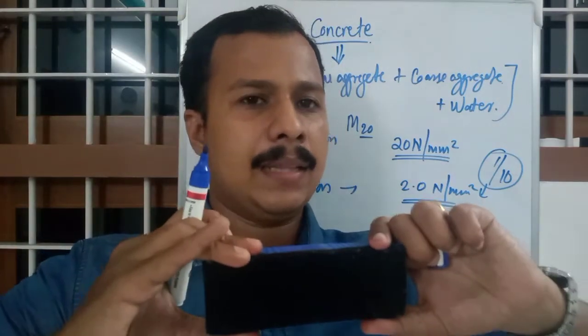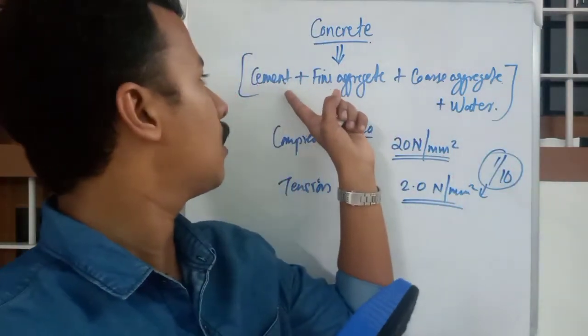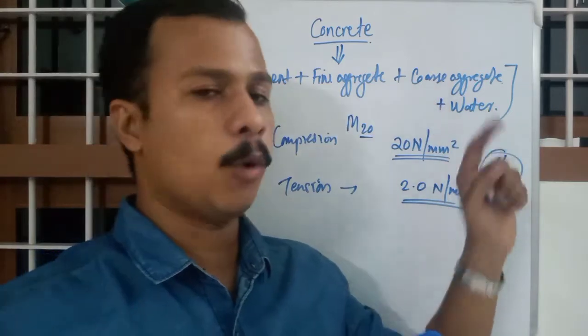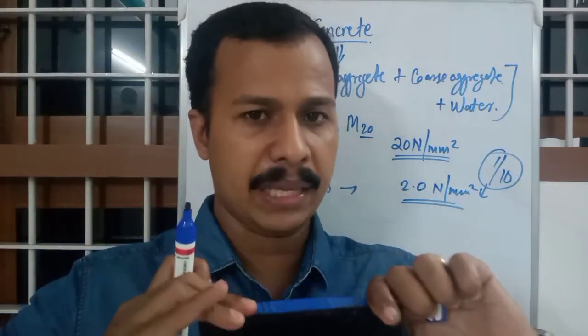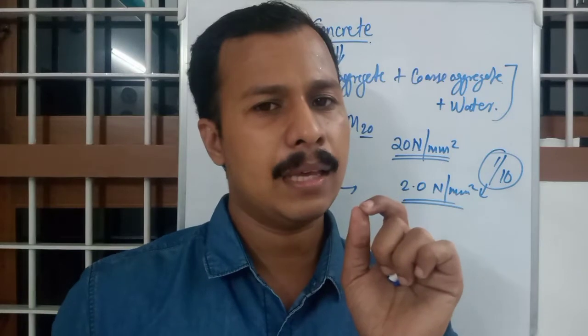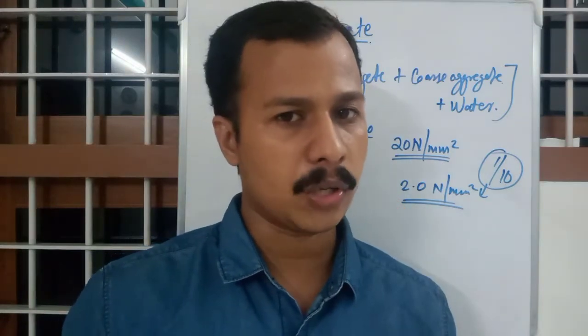But when I pull these ends, when I apply forces away from the subject, like this, I am pulling both ends, that is called as tension. This was compression, and when I am applying tension, it was very weak. It was only about 2.0 N per mm square, that is around 1 by 10th of compressive strength. So when I am pulling this mixture of cement, fine aggregate, coarse aggregate, and water, it will easily break when I am taking concrete. So that was a major drawback of concrete at that time.